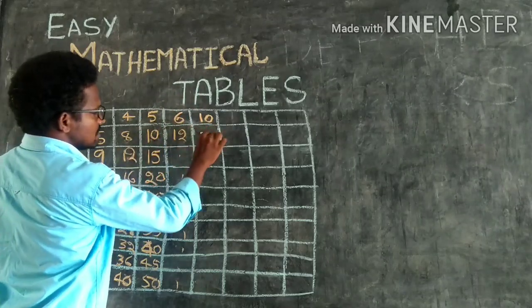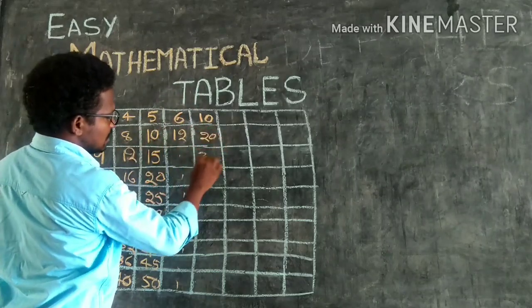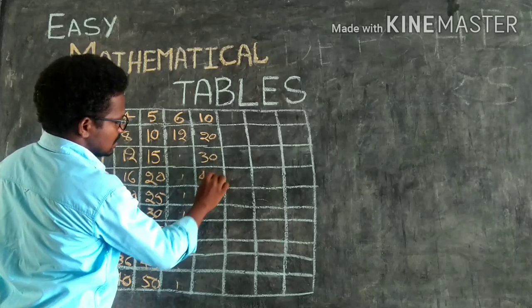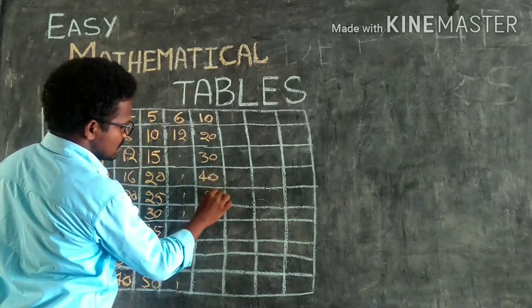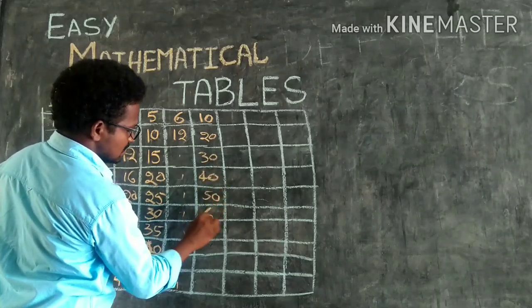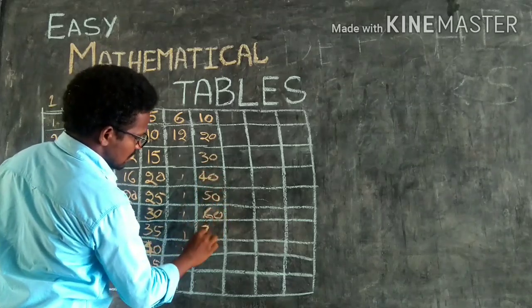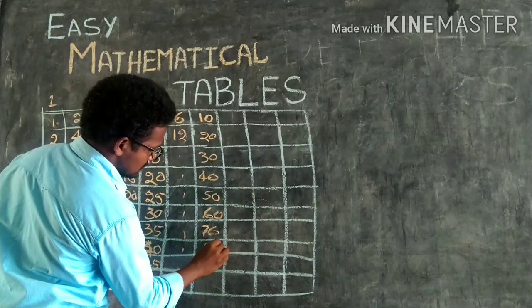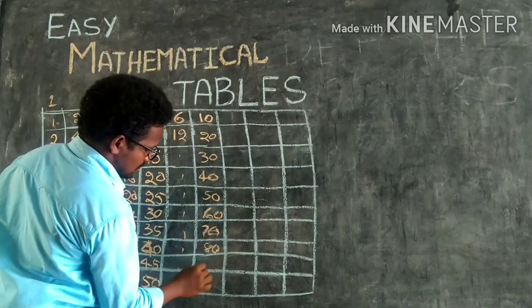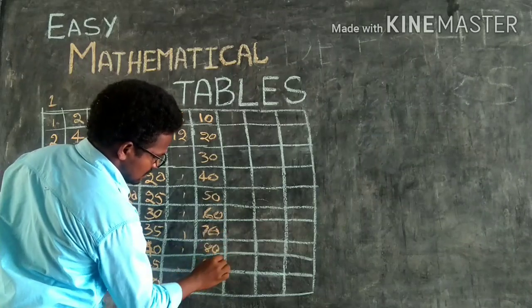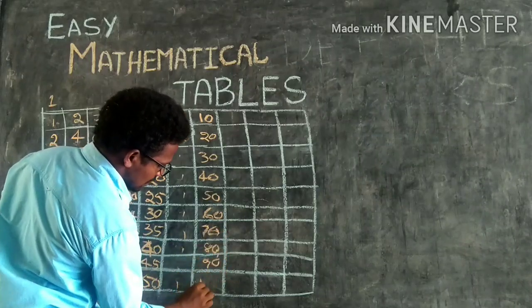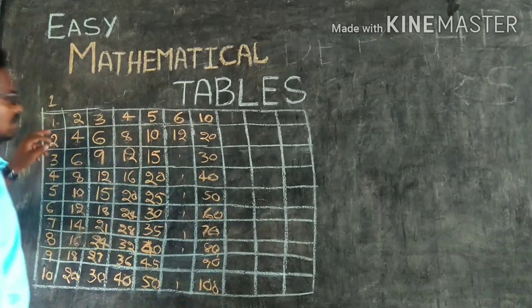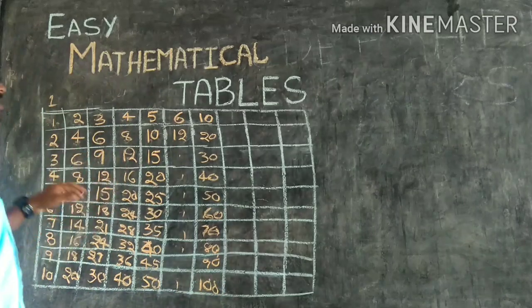So like that, you see: 10, 20, 30, 40, 50, 60, 70, 80, 90, 100 — like that. This is the 10th table.